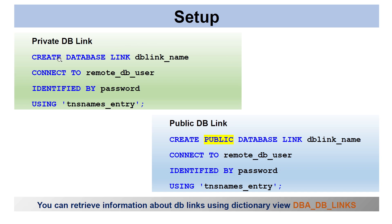To create a private DB link, the syntax is: CREATE DATABASE LINK [link_name] CONNECT TO [remote_db_user] IDENTIFIED BY [password] USING [TNS_name_entry]. To create a public DB link, the command is exactly the same except you add PUBLIC after CREATE, before DATABASE. To retrieve information about DB links, you can use the dictionary view DBA_DB_LINKS, which gives you information about all DB links present in the database.